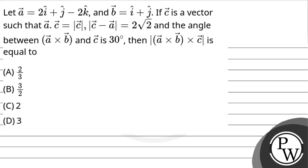Hello bachho, let us see the question. The question says: let vector a equals 2i plus j minus 2k, and vector b equals i plus j. If c is a vector such that a dot c equals magnitude of c, magnitude of c minus a is 2 root 2, and the angle between a cross b and c is 30 degrees. Then the magnitude of a cross b cross c is equal to — these are the given options.